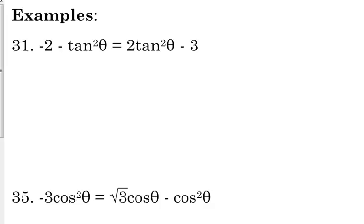Number 31 is a quadratic trig equation. How do I know that? Because the tangent is squared. It's just like when your x is squared in a polynomial equation — that's a quadratic. Same thing here.